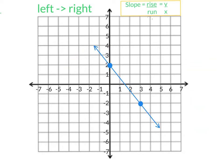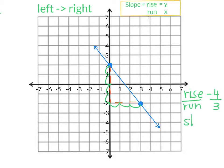I'm going to draw our pathway. As we can see here, we are not going to rise — we're actually going to go down. We're going to go down one, two, three, four. So the rise is negative four. And from here, we're going to run to the right one, two, three. So our slope is negative four-thirds.